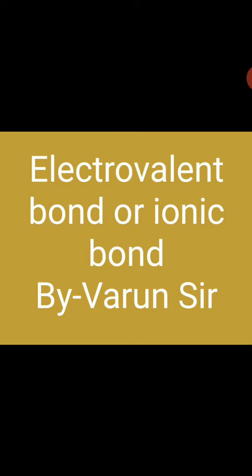अब इस bond की बनने की condition क्या है: one atom होना चाहिए metals और second atom होना चाहिए non-metals। यानि यह bond metals और non-metals के बीच में formed होगा। Second, इनकी electron negativity का difference 1.7 या 1.7 से ज्यादा होना चाहिए, तभी यह bond का formation होगा। अगर 1.7 से कम है electron negativity का difference, तो यह bond का formation नहीं होगा।